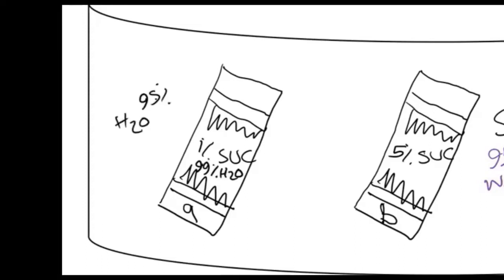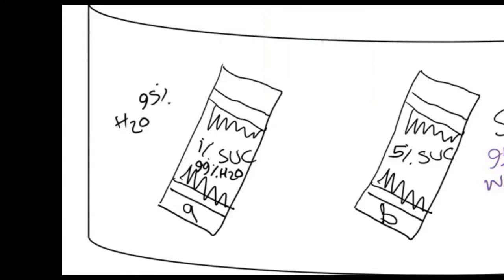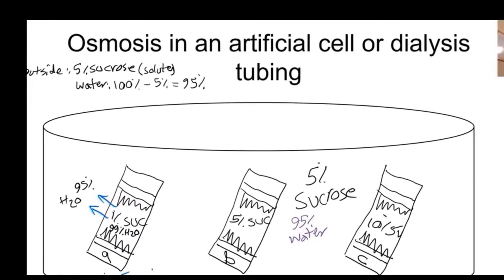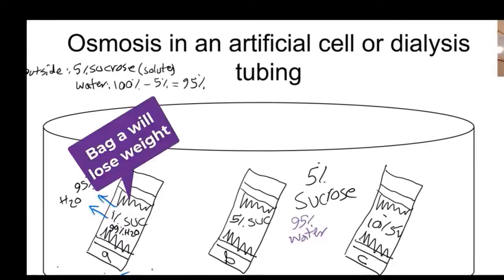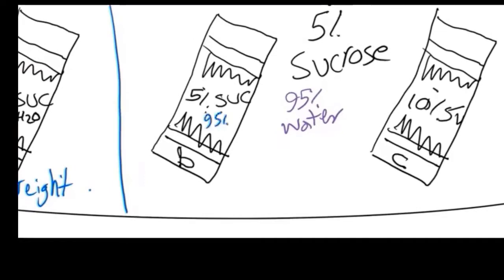Outside you have 95% water — what do you think, does water enter the bag or leave the bag? In this example, water leaves the bag. Because water leaves the bag, bag A will lose weight. For bag B, the solute concentration inside is equal to the solute concentration outside, which means bag B is isotonic to the outside.